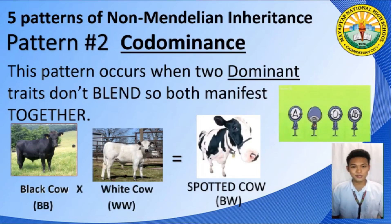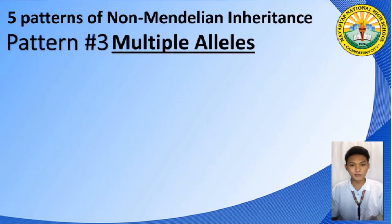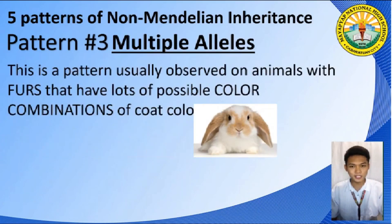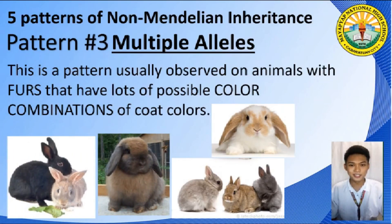As a bonus, Co-Dominance is also observed in blood typing. There is a special part in your activity sheet dedicated for blood types, so I encourage you to please read and explore that part because blood typing is so interesting. Pattern number three is called Multiple Alleles. This pattern usually occurs in animals with fur that have lots of possible combinations of coat colors, like the bunny shown on your screen.